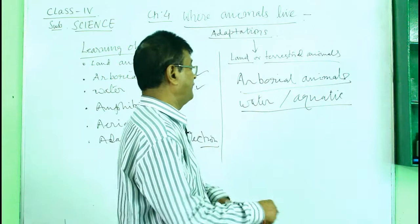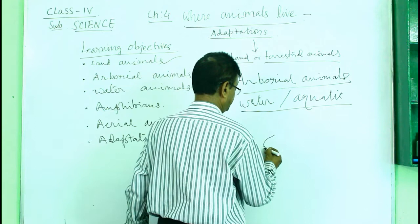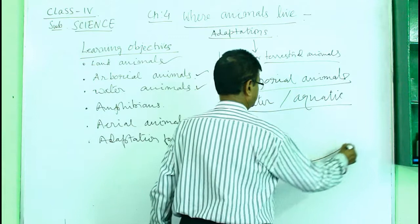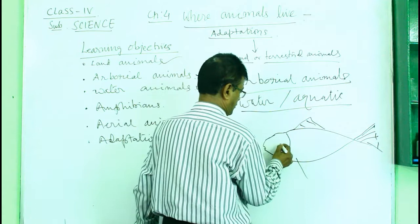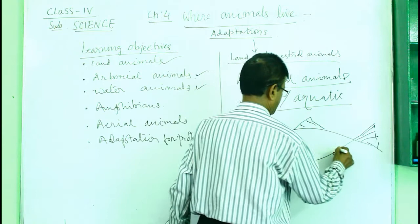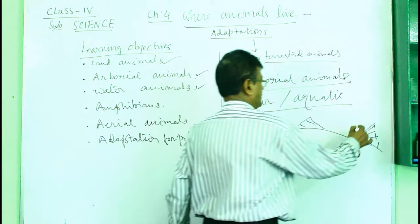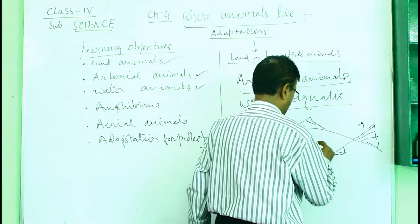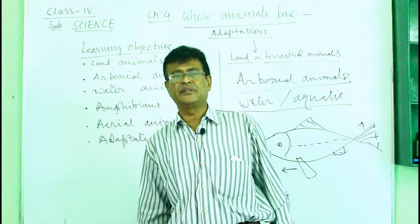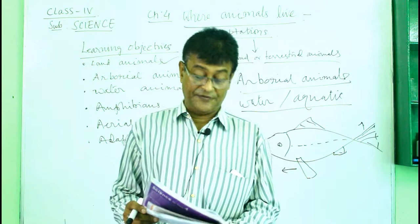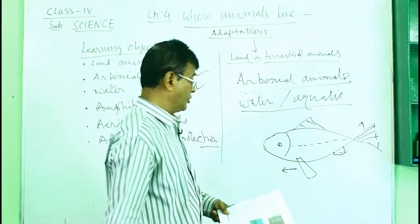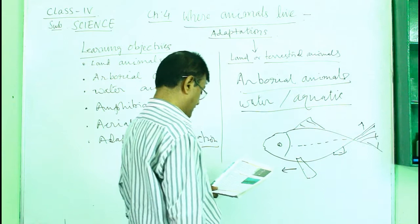Taking fish as an example: fish have tails that act as rudders. They have dorsal fins, pectoral fins, and pelvic fins. These fins help them propel forward, direct their movement, and maintain balance. Fish also have a lateral line along their body, which is a sense organ. Fish breathe in water through gills and their body is designed for aquatic life.